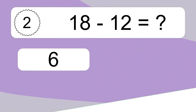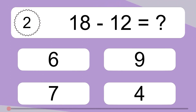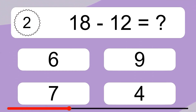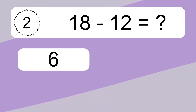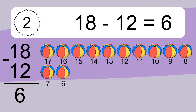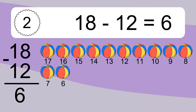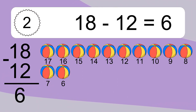18 minus 12 equals what? 18 minus 12 equals 6. Let's count it. 17, 16, 15, 14, 13, 12, 11, 10, 9, 8, 7, 6.